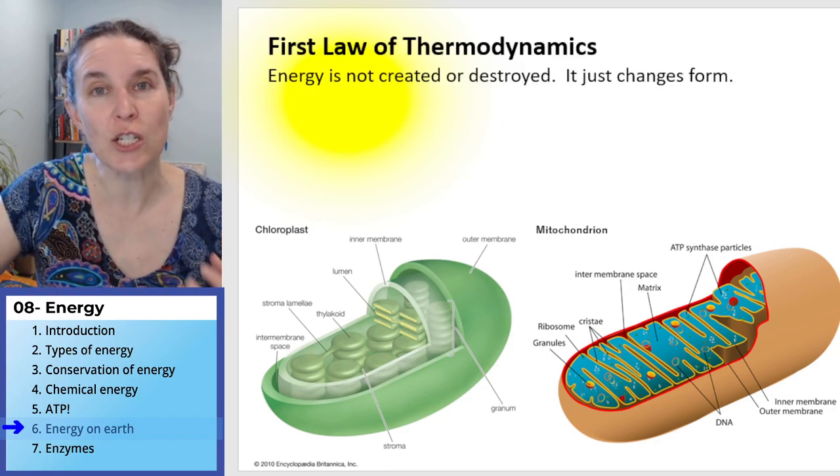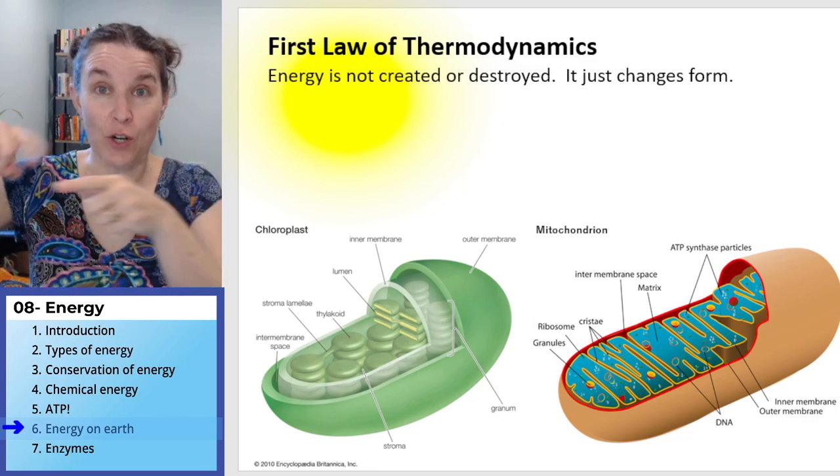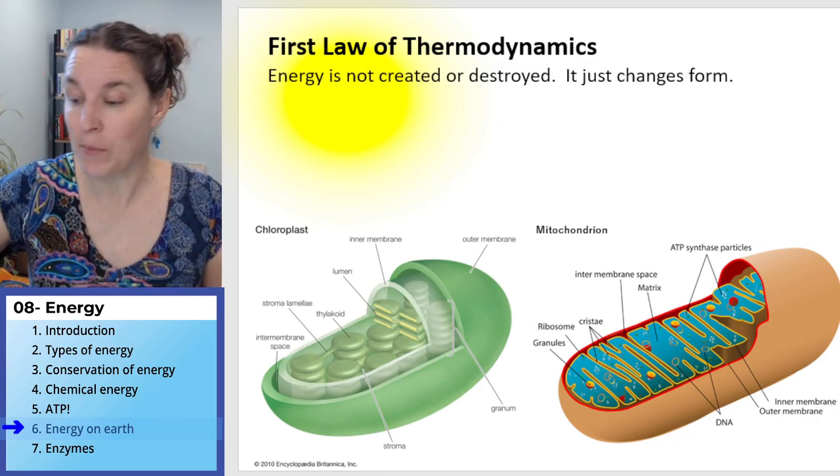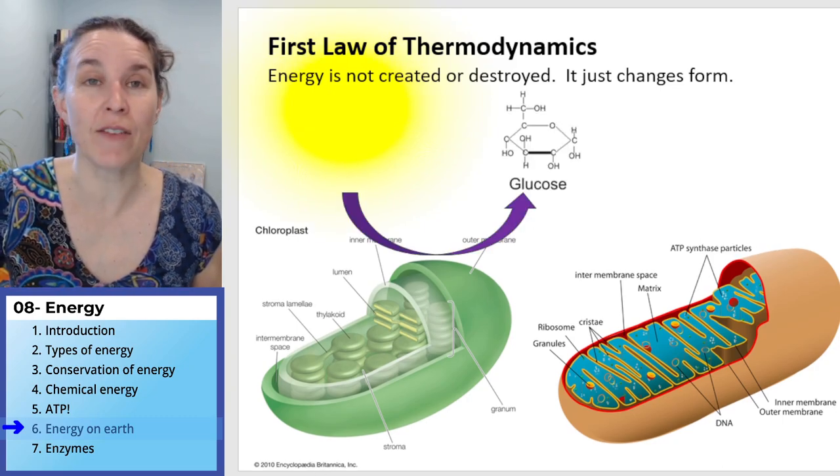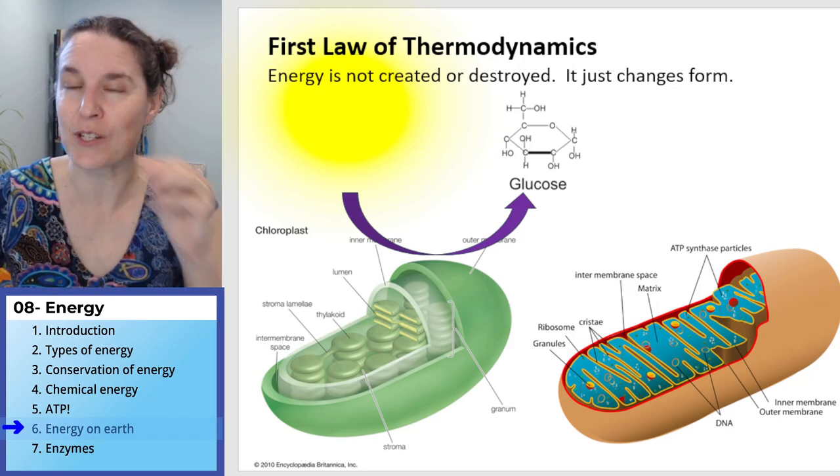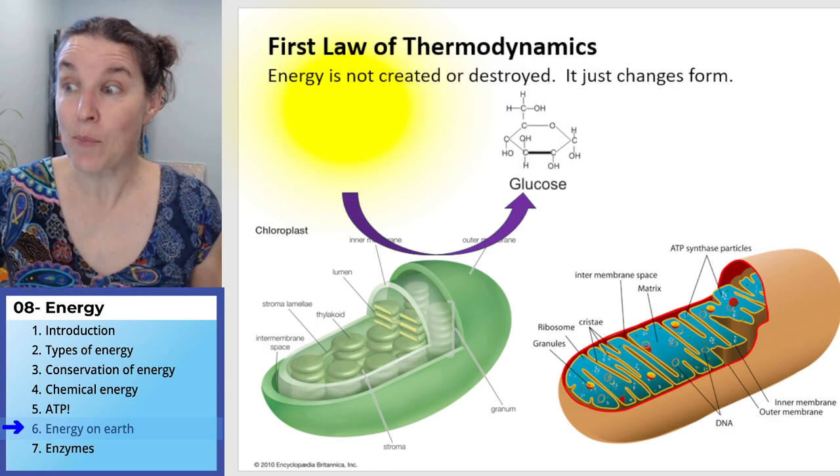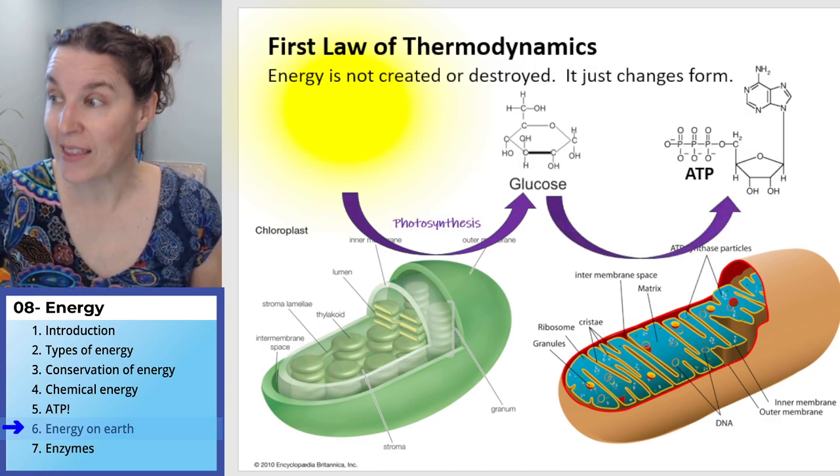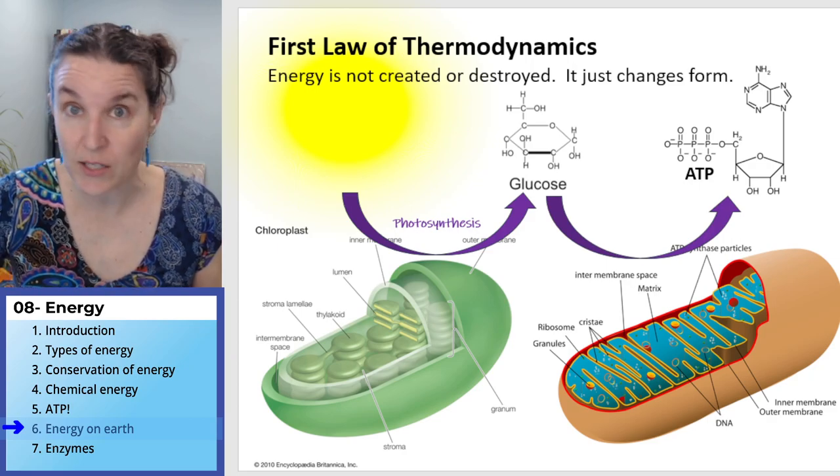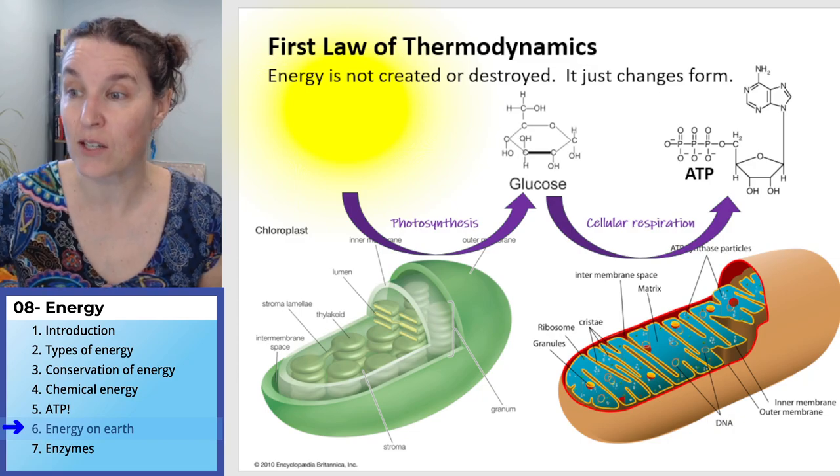Okay. And this is just showing us that energy is transferred, but it can't be created or destroyed. Remember, we have energy from the sun that's captured in the form of glucose. That happens in the chloroplast. And that process is called photosynthesis. When we take that glucose molecule and transfer it into ATP, that process is called cellular respiration.